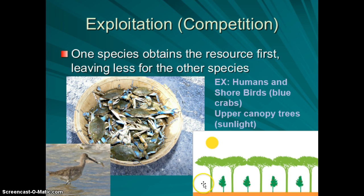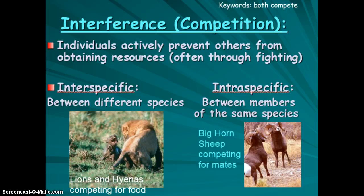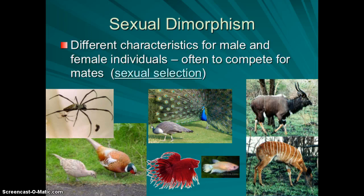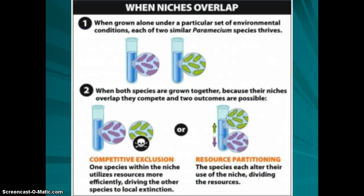The other mechanism is interference competition, where individuals actively prevent others from getting a resource, usually through fighting. Interspecific interference includes lions and hyenas competing and fighting over food. Intraspecific interference includes bighorn sheep competing for mates. In individuals of the same species, you often see sexual dimorphism — where males and females look completely different — resulting from sexual selection to better compete for mates.